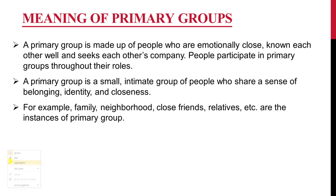Meaning of primary groups: A primary group is made up of people who are emotionally close, know each other well, and seek each other's company. People participate in primary groups throughout their lives. A primary group is a small, intimate group of people who share a sense of belonging, identity, and closeness.